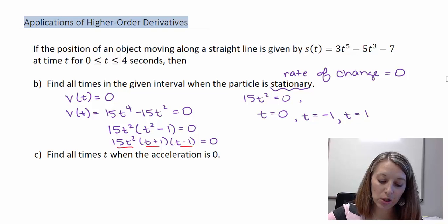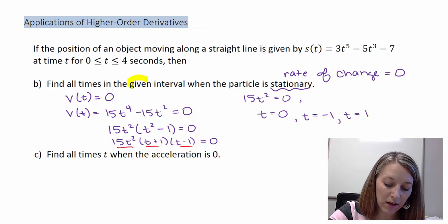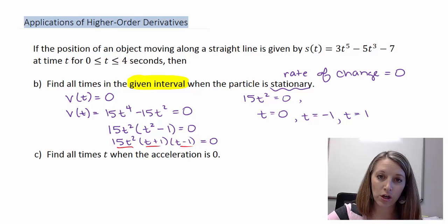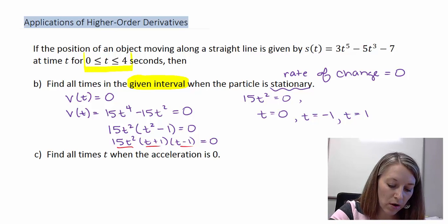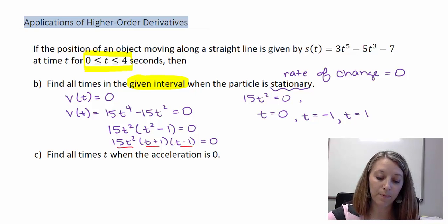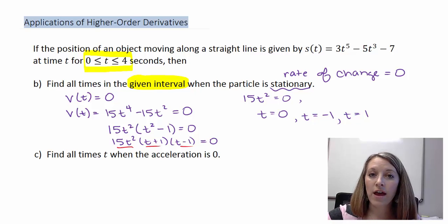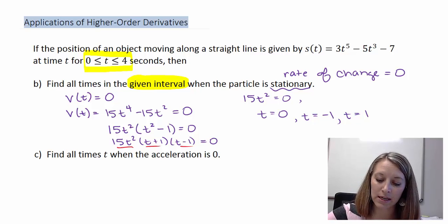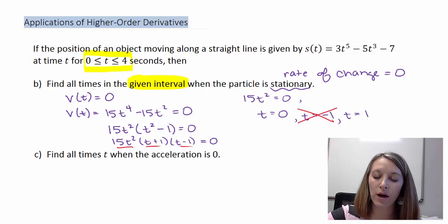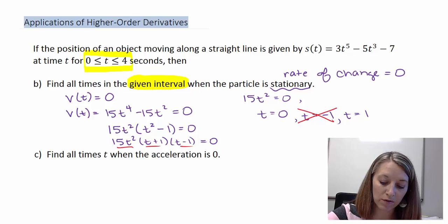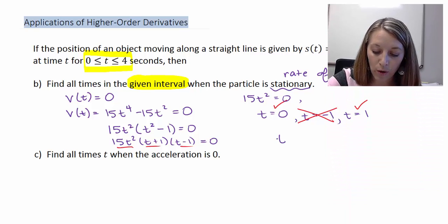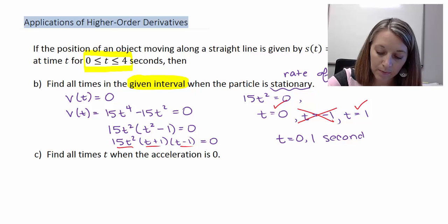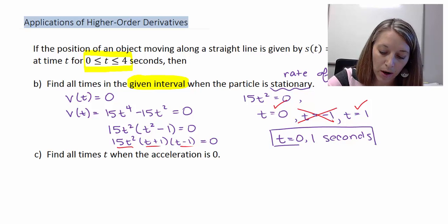We have one extra consideration: we only want times in the given interval from 0 to 4 seconds. Since t represents time, a negative time value doesn't make sense, so t = −1 is discarded. The remaining solutions, t = 0 and t = 1, both fall within the interval. So the particle is stationary at 0 seconds and at 1 second. That is the answer to Part B.